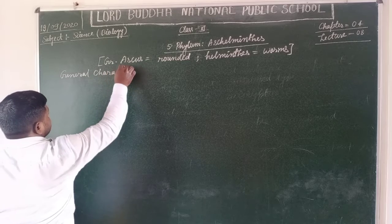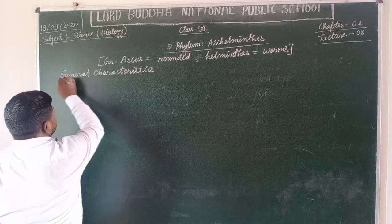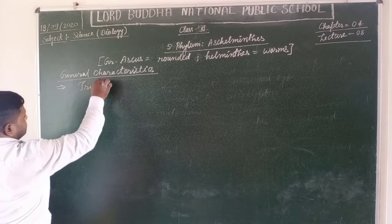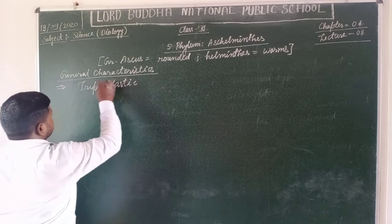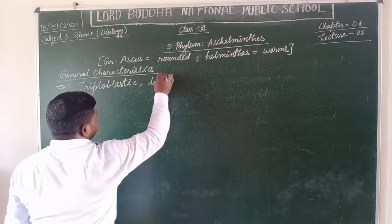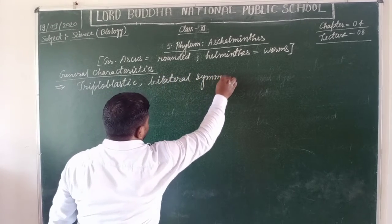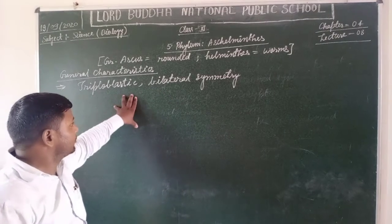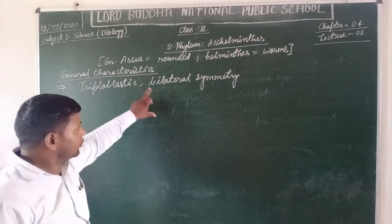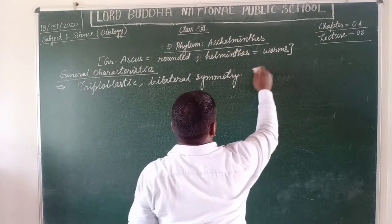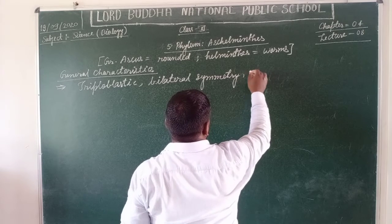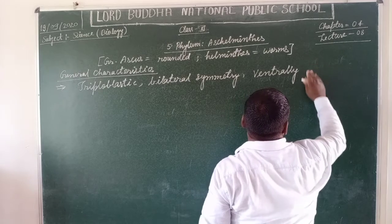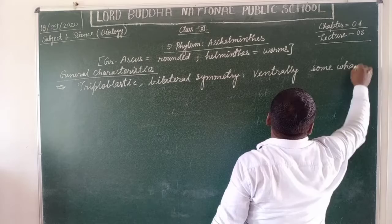General characteristics: The members' body is triploblastic and bilaterally symmetrical. Triploblastic means that all three germ layers are present in the members' body — ectodermal, mesodermal, and endodermal. Bilateral symmetry means the members of the body are ventrally somewhat rounded.